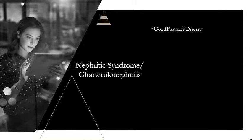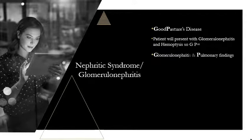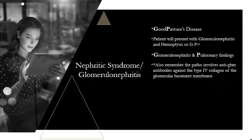The next important condition is Goodpasture's disease. Using the G and P: G stands for glomerulonephritis, P stands for pulmonary findings — patients present with glomerulonephritis and hemoptysis. The pathophysiology involves anti-GBM antibodies against type 4 collagen of the glomerular basement membrane. That's important to know even though there isn't a simple mnemonic for it.